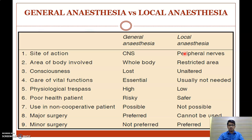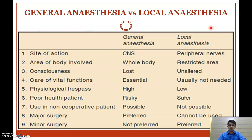In contrast, local anesthetics act at peripheral nerves, involving only a restricted area of the body. Consciousness is unaltered, care of vital functions is usually not needed, physiological emergencies are low, they are safer in poor-health patients, cannot be used in non-cooperative patients, cannot be used in major surgery, and are preferred in minor surgery. This comparison is a frequently asked university exam question.